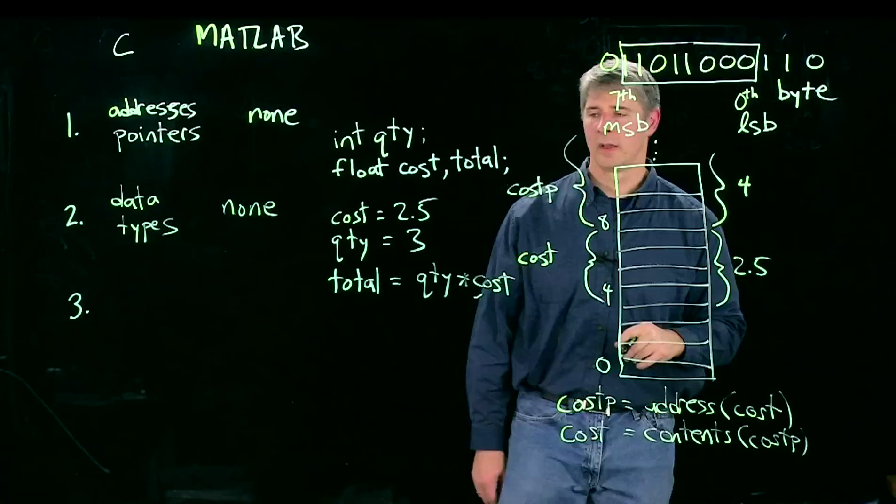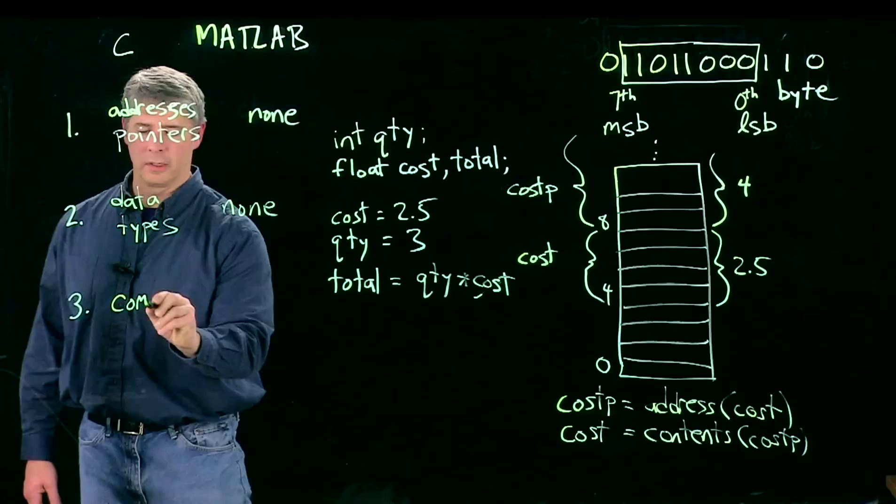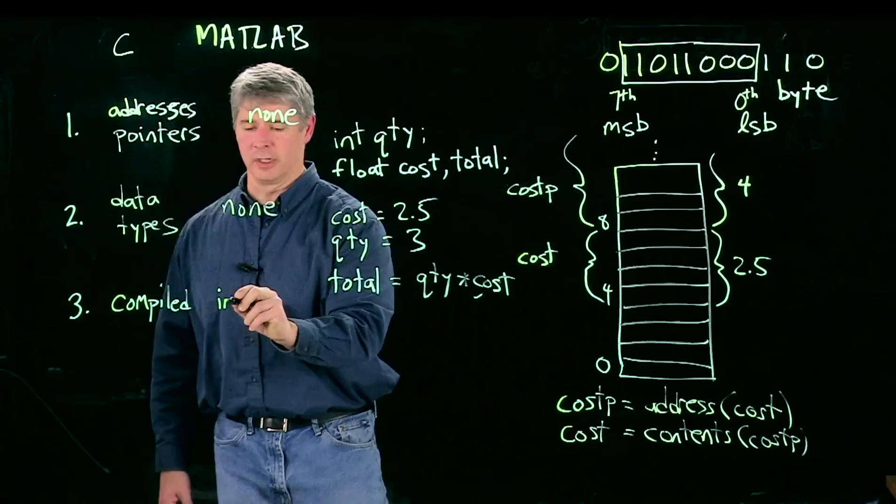Finally, the third difference between MATLAB and C is that C programs are compiled, meaning that your source code is taken and turned into an executable version of that code. Whereas in MATLAB, it's just interpreted, which means that your code is in real time while it's running turned into machine executable code. So this is a major difference. Compiled code can be optimized and generally runs faster because it's been fully compiled in advance.